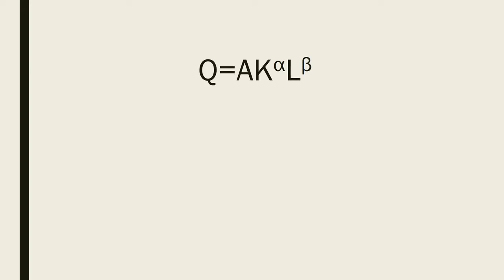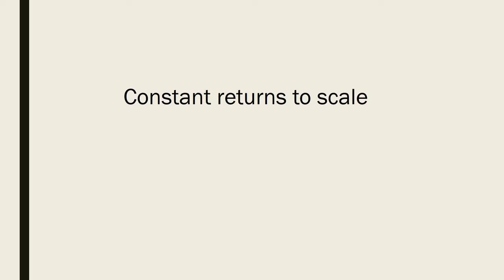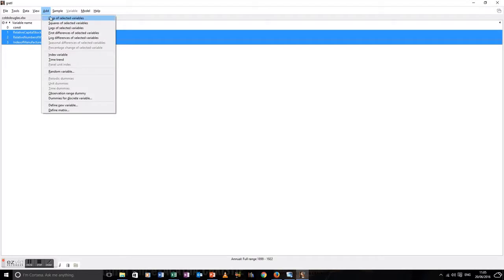Let's think about the Cobb-Douglas production function. It says that output equals A times K to the alpha — where K is capital — times L to the beta. Taking logs of both sides gives us the linear form. The linear restriction we're looking at is constant returns to scale, that is, alpha plus beta equals one. That's the model.